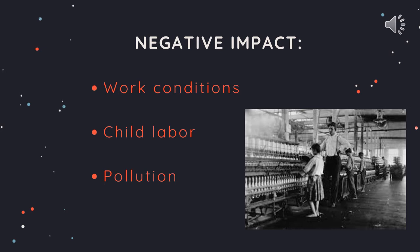Now let's look at the negative impacts of the Industrial Revolution, which include work conditions, child labor and pollution. The conditions that children worked under during the Industrial Revolution were morbid. They had long and inflexible working hours — according to many studies, these hours ranged from 14 hours a day or 70 hours per week.